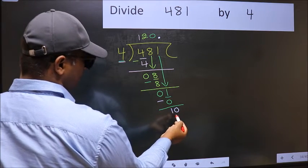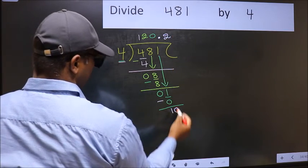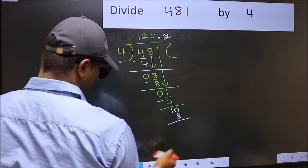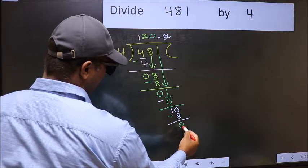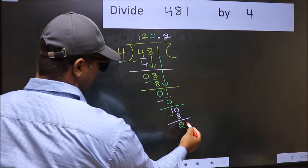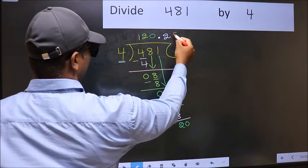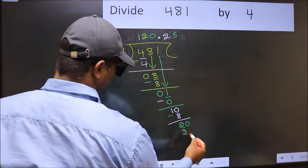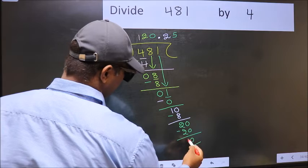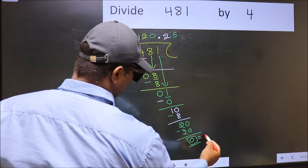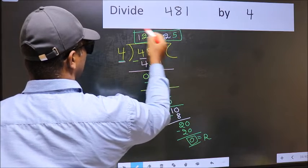So we have 10. A number close to 10 in the 4 table is 4 twos, 8. Now you should subtract: 10 minus 8 is 2. We already have a decimal, so directly take 0. When do we get 20 in the 4 table? 4 fives, 20. Now you subtract, you get 0. So this is our remainder and this is our quotient.